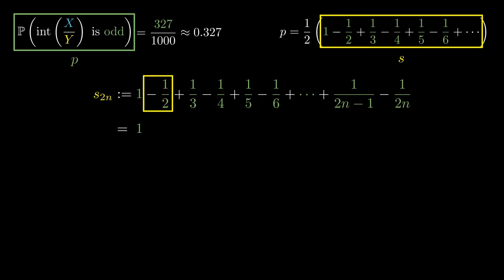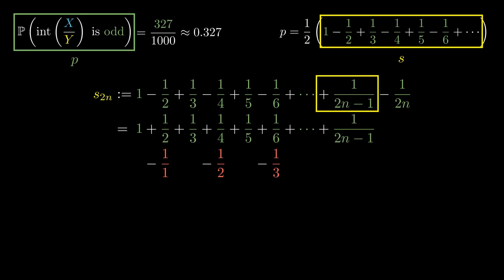But the number negative of a half could be thought of as a half subtracted by 1. Now 1 over 3 is just 1 over 3. But negative of 1 over 4 can be thought of as 1 over 4 minus 1 over 2. And the negative of 1 over 6 can be thought of as 1 over 6 subtracted by 1 over 3. We can keep on going on and on. And something interesting happens.